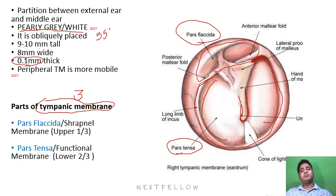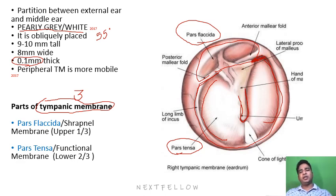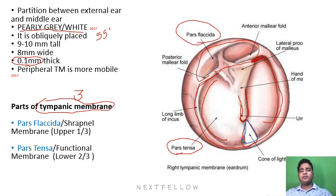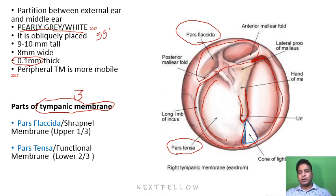Pars tensa forms the lower two-thirds area of the tympanic membrane and is the functional part, while pars flaccida is the upper one-third and is relatively non-functional. In the diagram, a cone of light is shown, which indicates a normal tympanic membrane. This cone of light is generally in the anteroinferior quadrant — that is, the anterior and inferior quadrant.